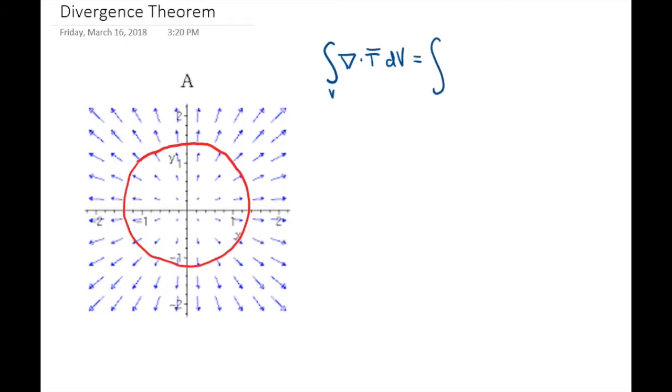We can write this as the volume integral of the divergence of the function over the volume is equal to the integral over a closed surface, the little circle means closed, of the function itself, where dA is an infinitesimal piece of the surface.